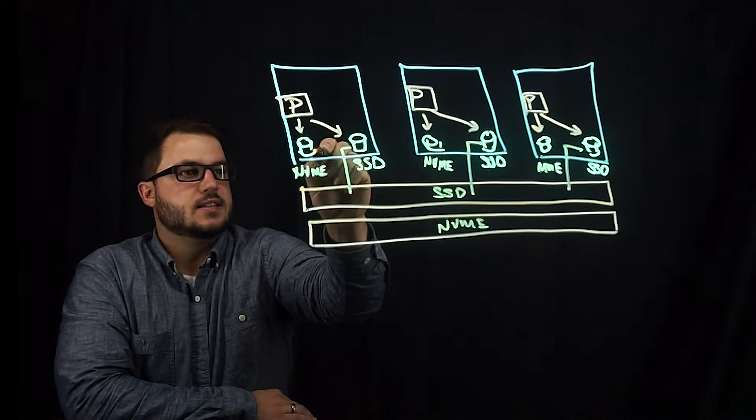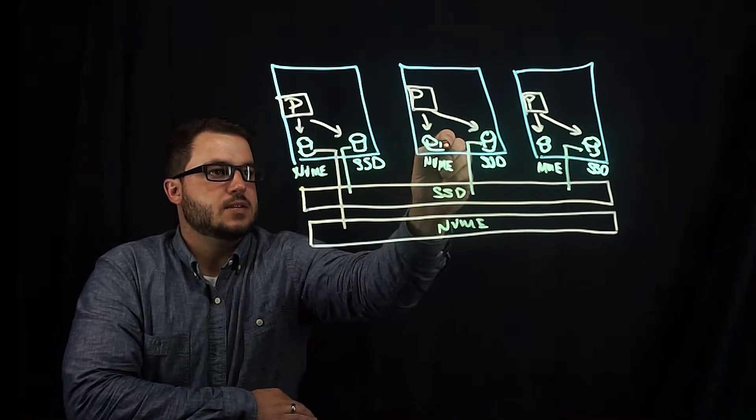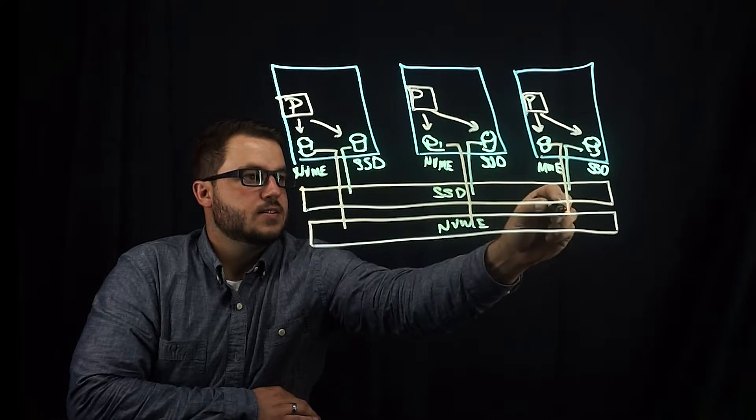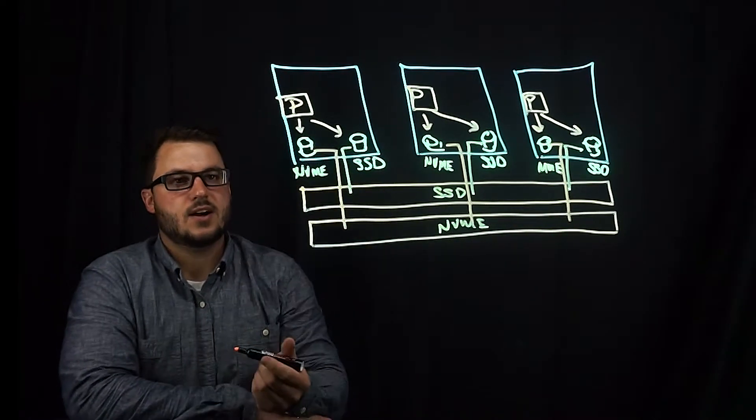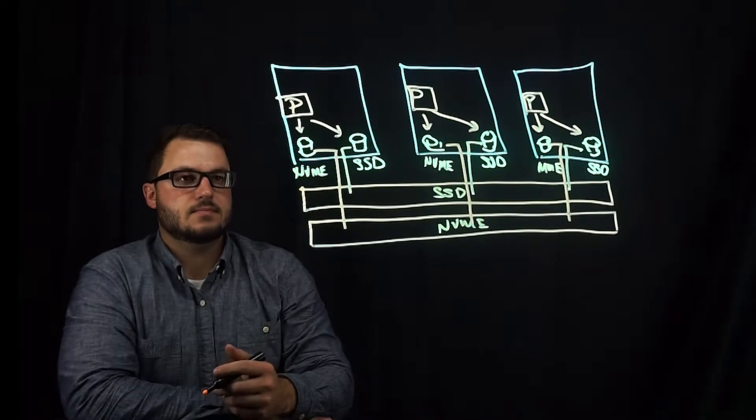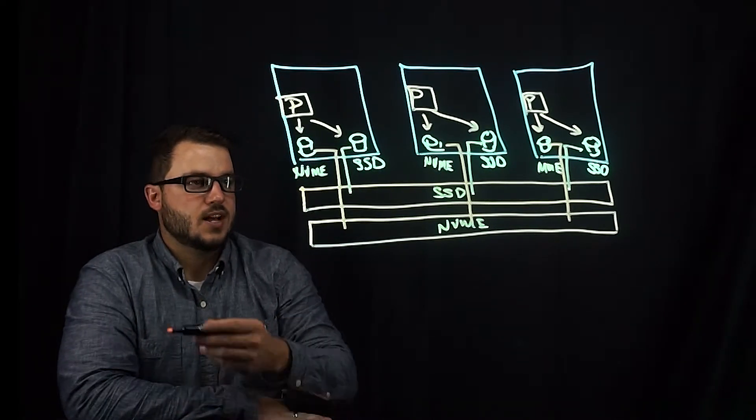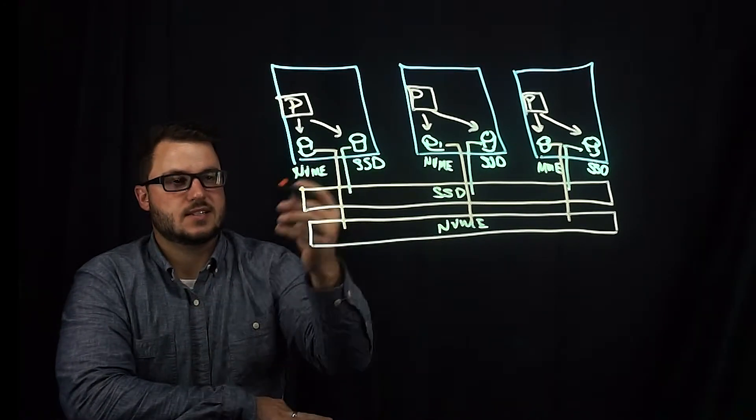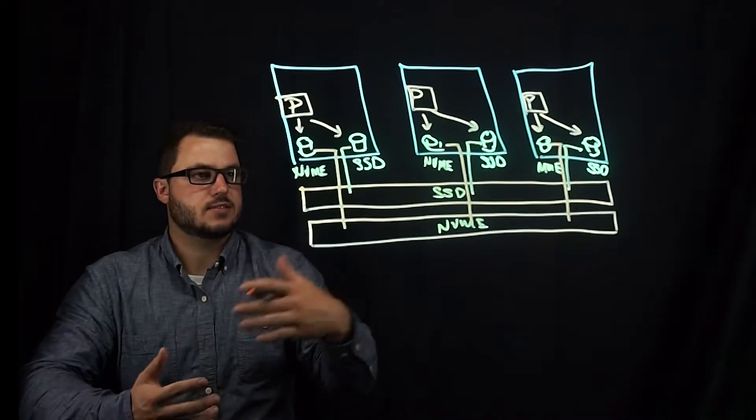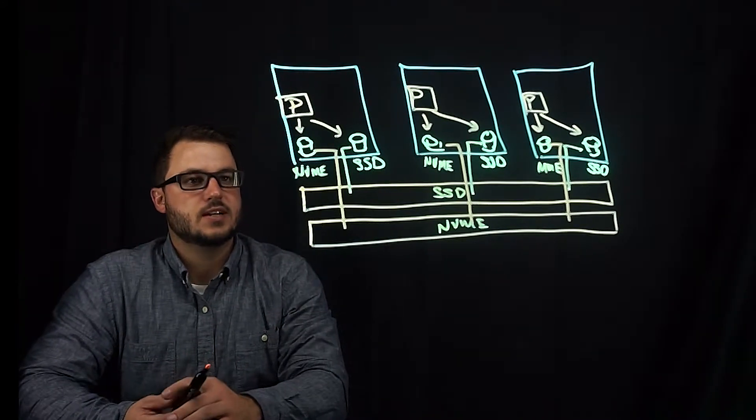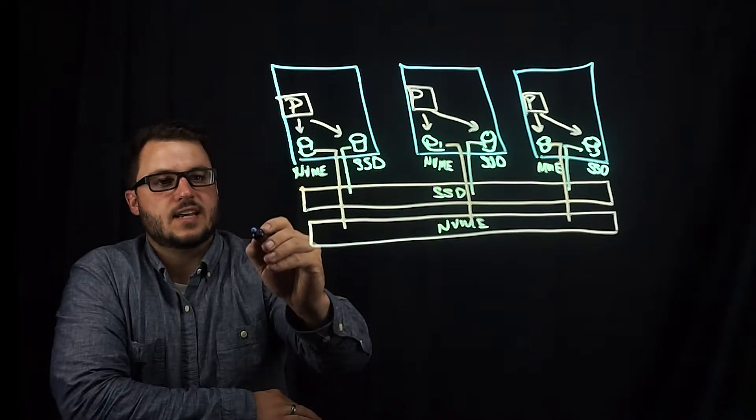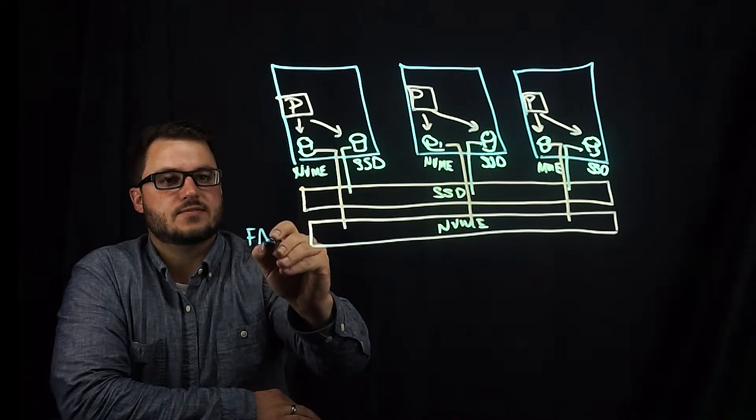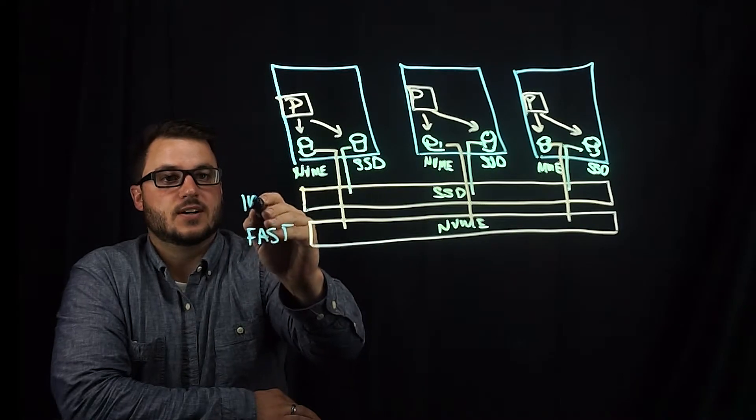NVME will go down here. Say NVMEs are a terabyte, you'll have a total of three terabytes. In SSDs, 100 gigabytes or 300 gigabytes total. And Portworx will give these pools names such as fast or medium.